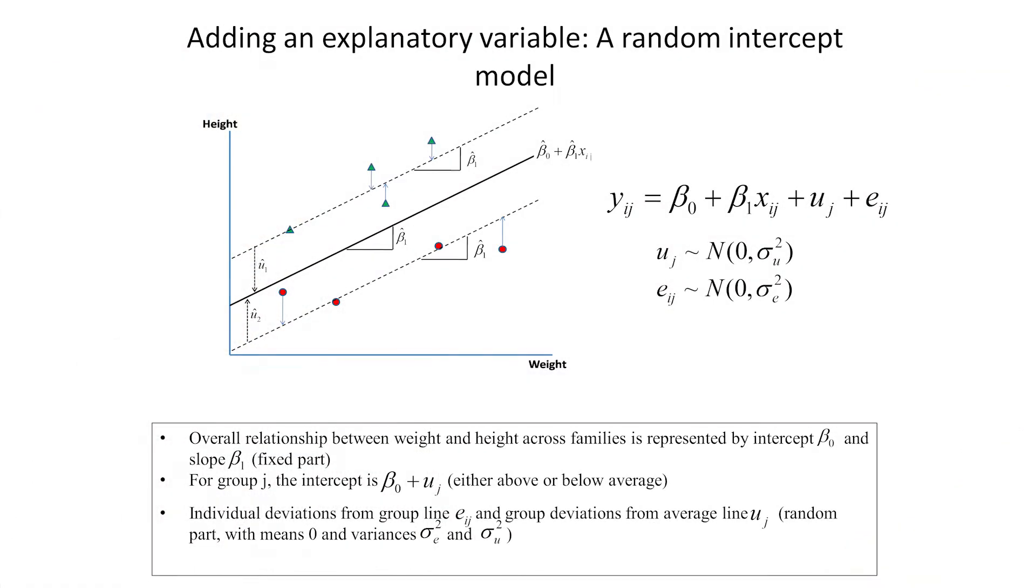We can then add explanatory variables to our model in exactly the same way we do in single level regression models. So, adding a single explanatory variable weight to our model of mean heights, the regression line represents the line of best fit that's closest to all data points simultaneously, or which minimises the squared residuals.